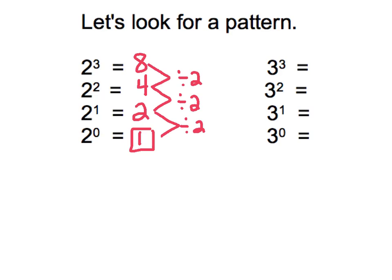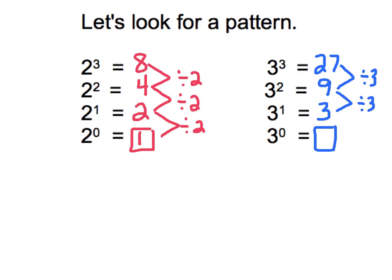Let's see if it works with the factors of 3. 3 to the third power, 3 times 3 times 3, is 27. 3 squared, 3 times 3, is 9. 3 to the first power, just 1 factor of 3, is 3. If I look at how I go from 27 to 9, I'm dividing by 3. Again, 9 divided by 3 gives me 3. So to figure out 3 to the zero power, 3 divided by 3 gives 1. It seems that anything to the zero power will give me 1.